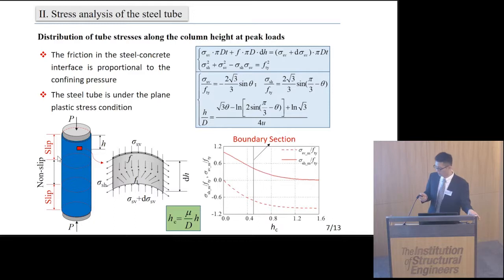Based on this, we can take a micro unit of the steel tube in the slip region to analyze the tube stresses. In the longitudinal direction, we can establish the equilibrium equation and then combine it with the Von Mises yield criteria. Based on this, we can derive the parametric equations for predicting the tube stresses at peak loads.